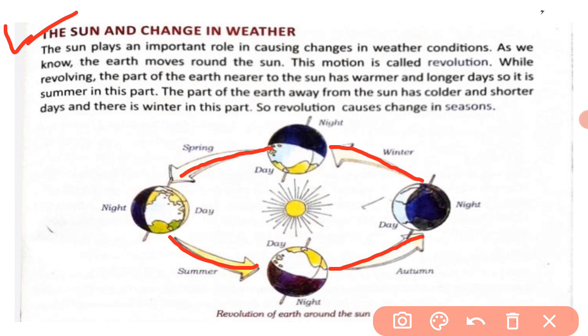The part of the earth away from the sun has colder and shorter days, and there is winter in this part. Earth ka jo part sun se door hota hai, woh part colder hota hai aur wahan days shorter hote hain — isliye wahan winter season hota hai. So revolution causes change in seasons.